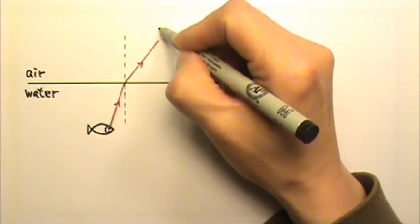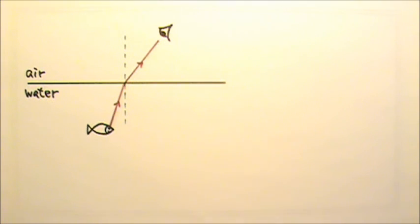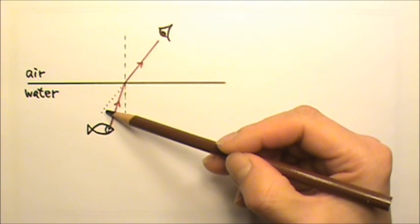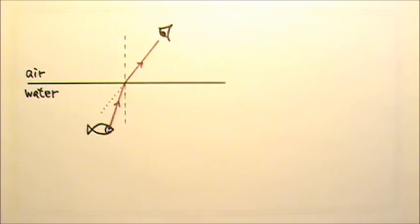For an observer over here, he or she would think the ray comes from here. So the observer would see the image of the fish above the fish.